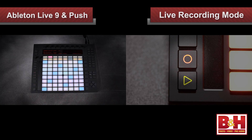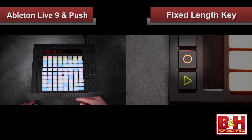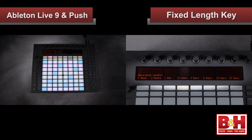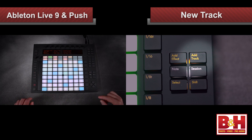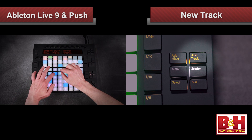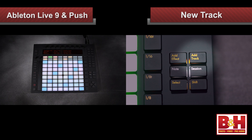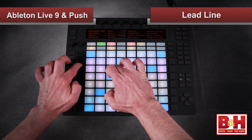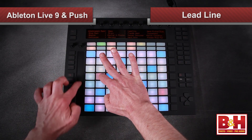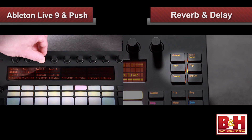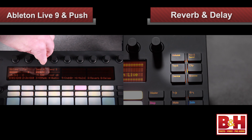I'll put Push into its live recording mode and play a simple part. I have the option to make the clip loop and record with the fixed length key, and that loop can be as short as one beat or as long as 32 bars. The bass part is done, so I'll add a new track, dial up another synth sound, play some chords, and quantize them. I can add a lead line, maybe even with a little pitch bend action. Let's put some reverb and delay on this sound by hitting the track key and dialing in some send to our effects with the encoder knobs.